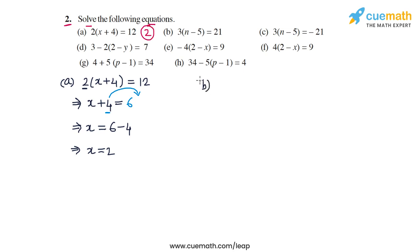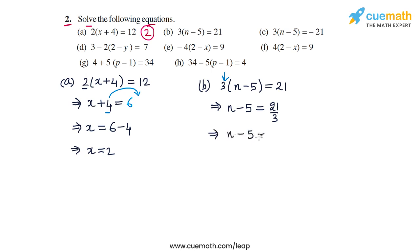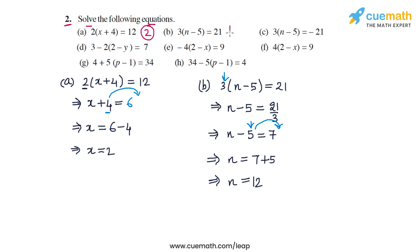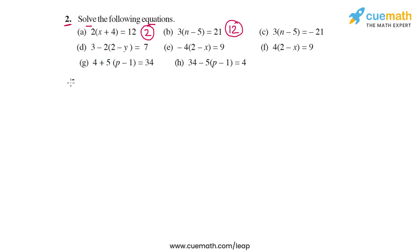In part b, the equation is 3 times (n minus 5) is equal to 21. First we divide both sides by 3, giving us n minus 5 on the LHS and 21 by 3, which is 7, on the RHS. We then add 5 to both sides, or transpose minus 5 to the right side to get plus 5, giving n = 7 plus 5, so n is equal to 12.